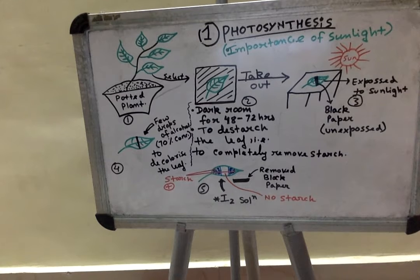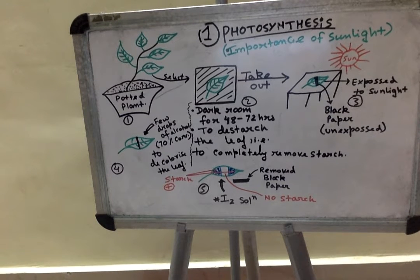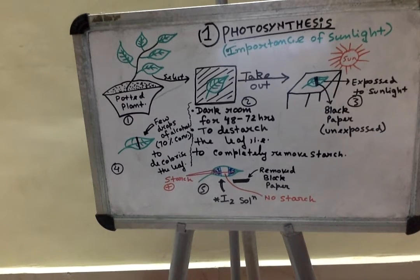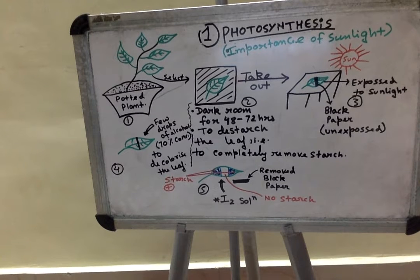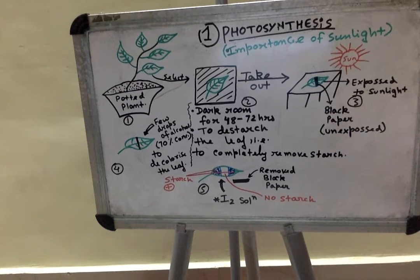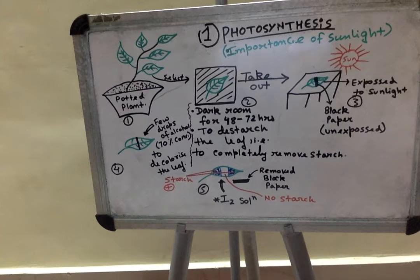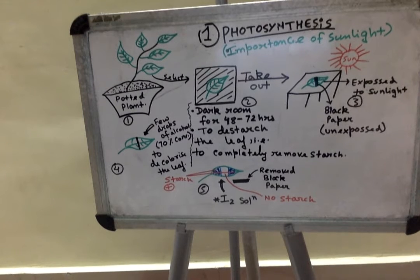Keep the selected leaf in a dark room for 48 to 72 hours, that is nearly two to three days. Then take the leaf out and keep it under sunlight for an hour or two.